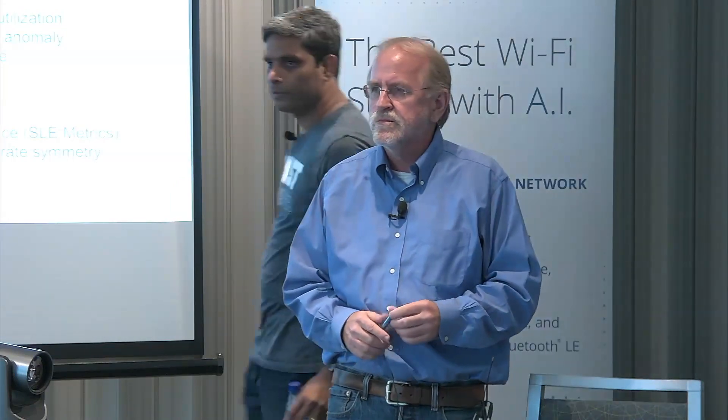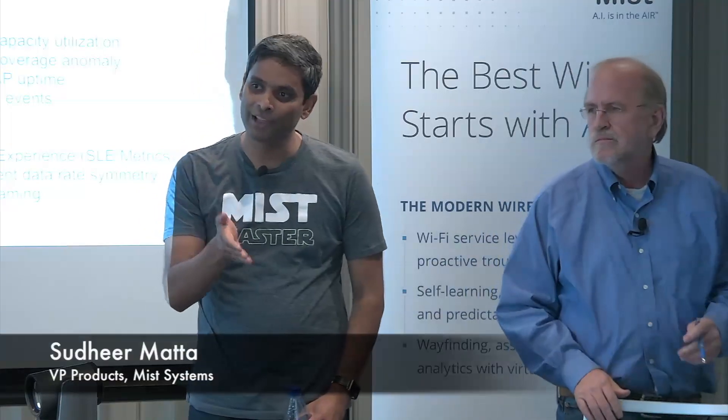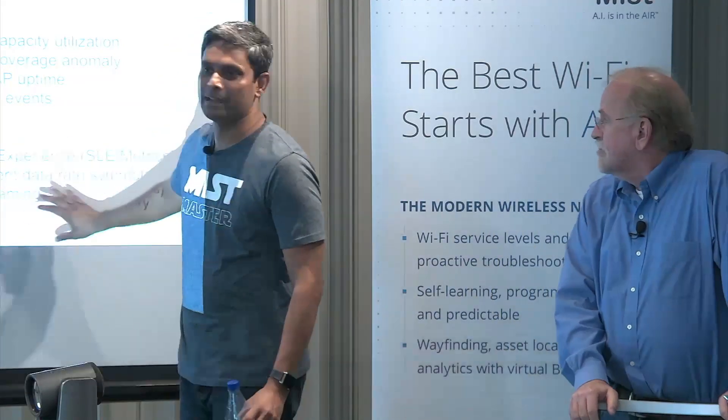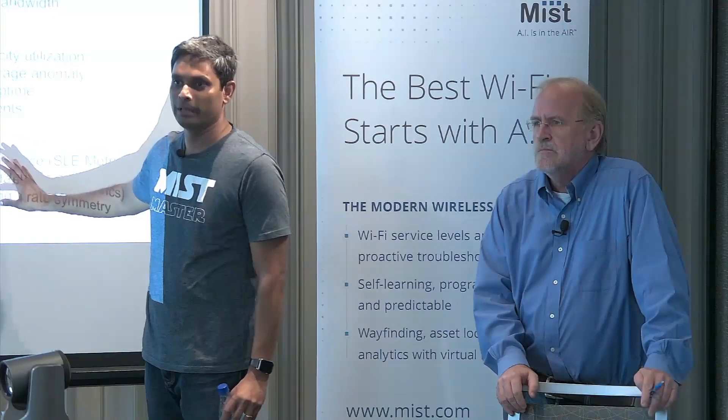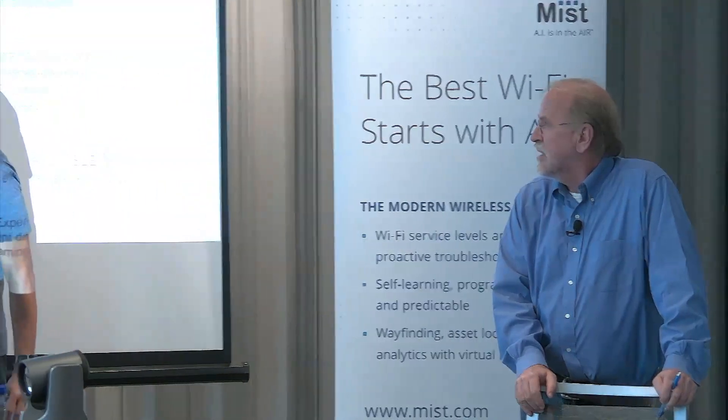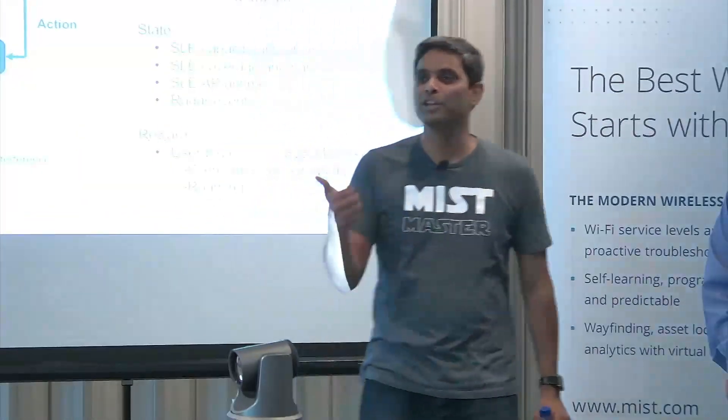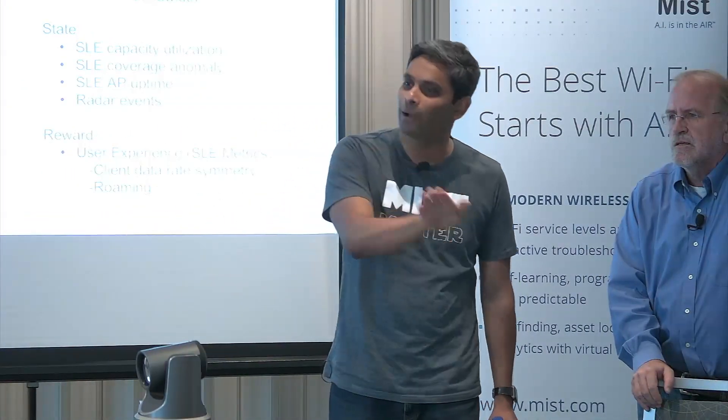The problem with making an RRM change once a day in the evening is you're making that change when all your walking attenuators have gone home. That creates the impact. Now we're using 24 hours worth of data — every minute, every client, average RSS. This is the piece that never existed in RRM before: how is my average user RSS? Did my change positively or negatively impact it? Not just how the APs can hear each other.